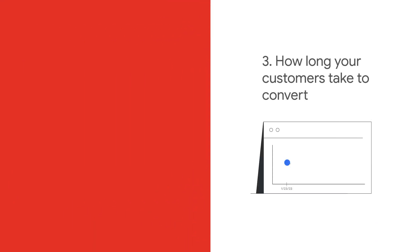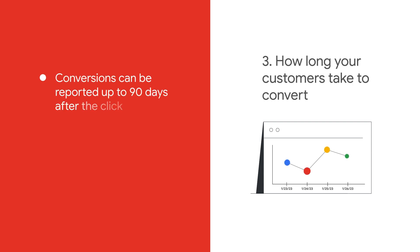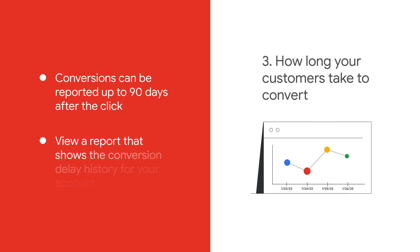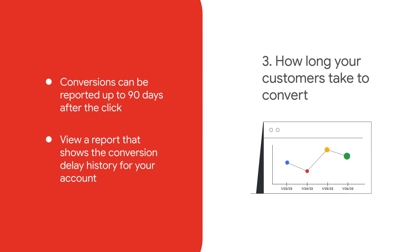The time between a customer impression and a conversion can also affect your data. Conversions can be reported up to 90 days after the click. To view those delays and get more insight, you can view a report that shows the conversion delay history for your account.